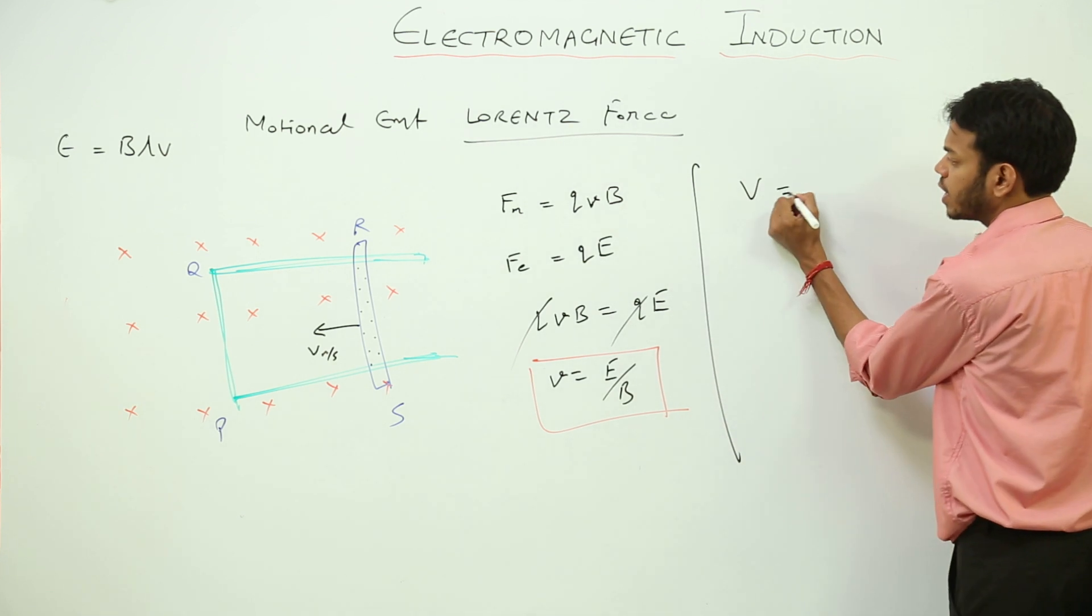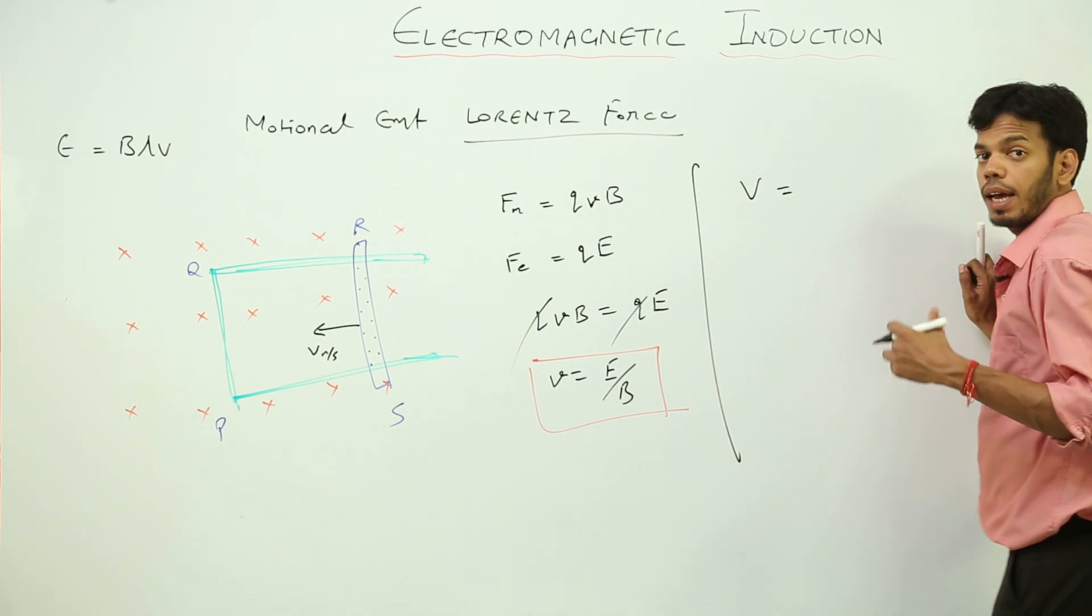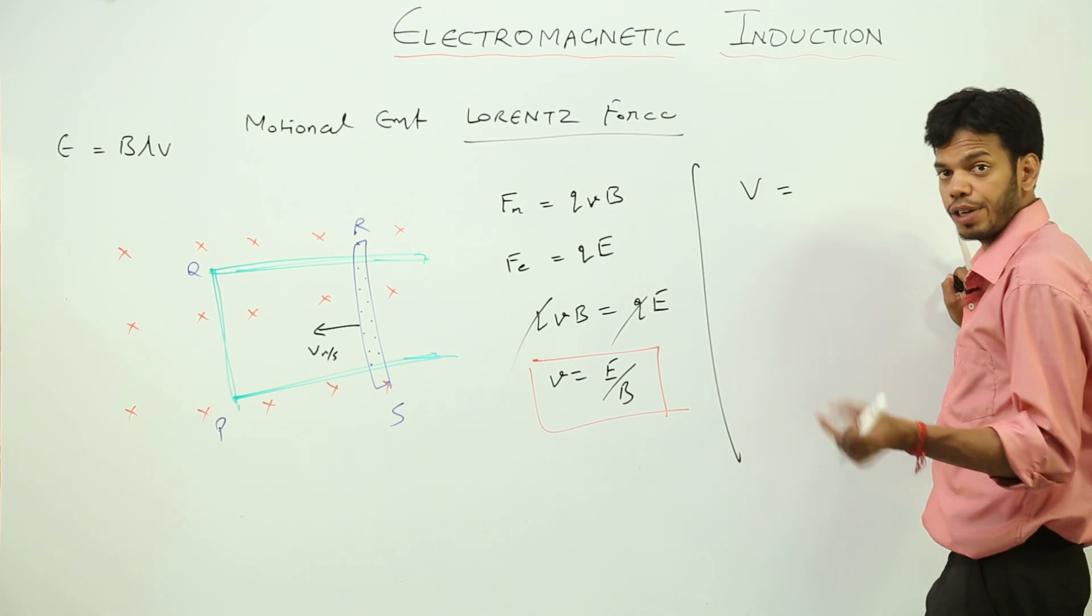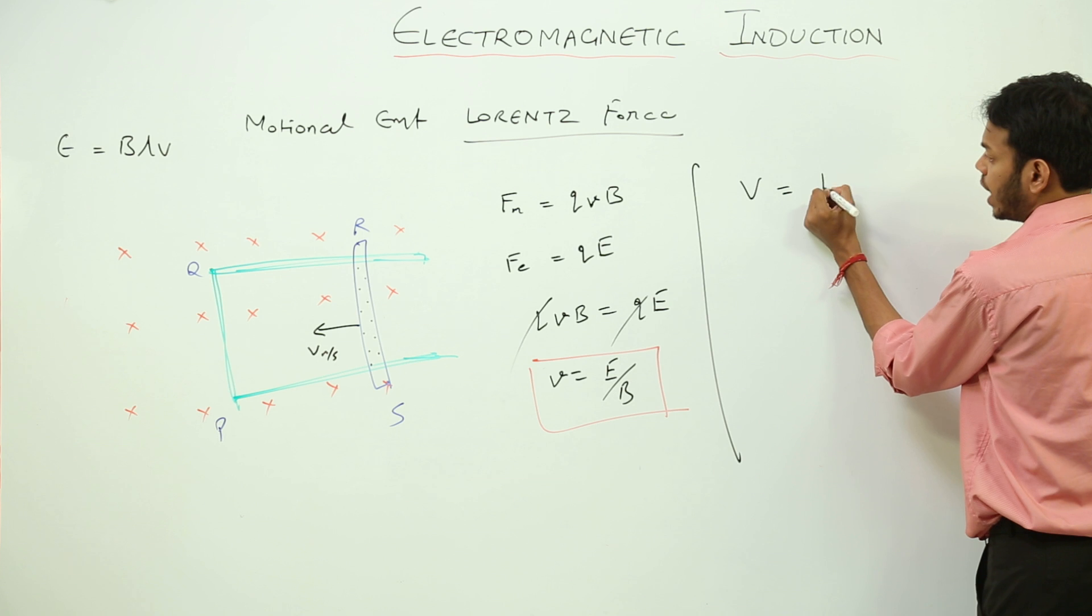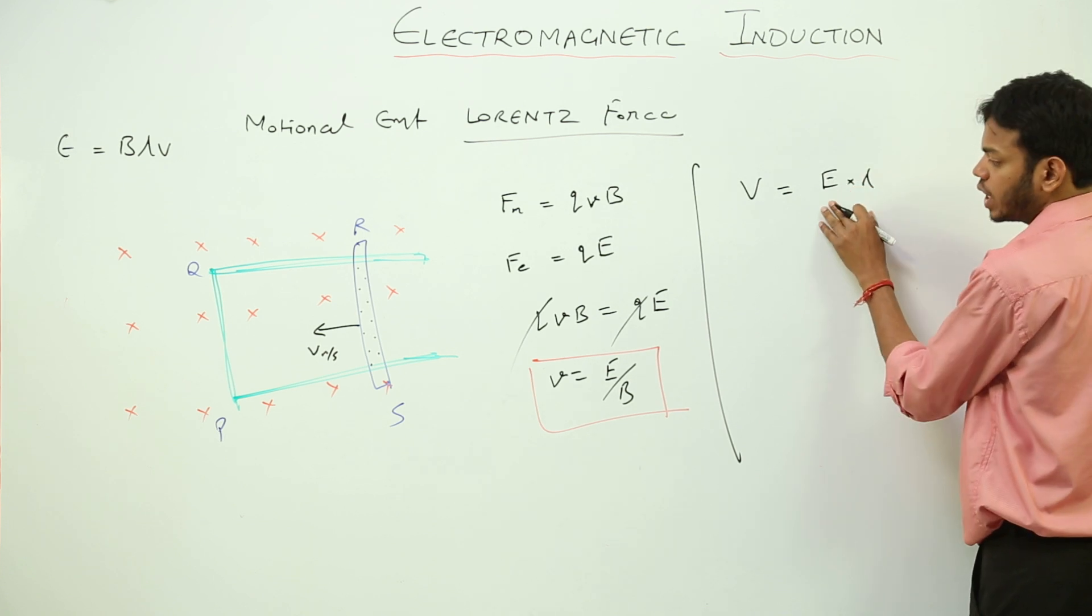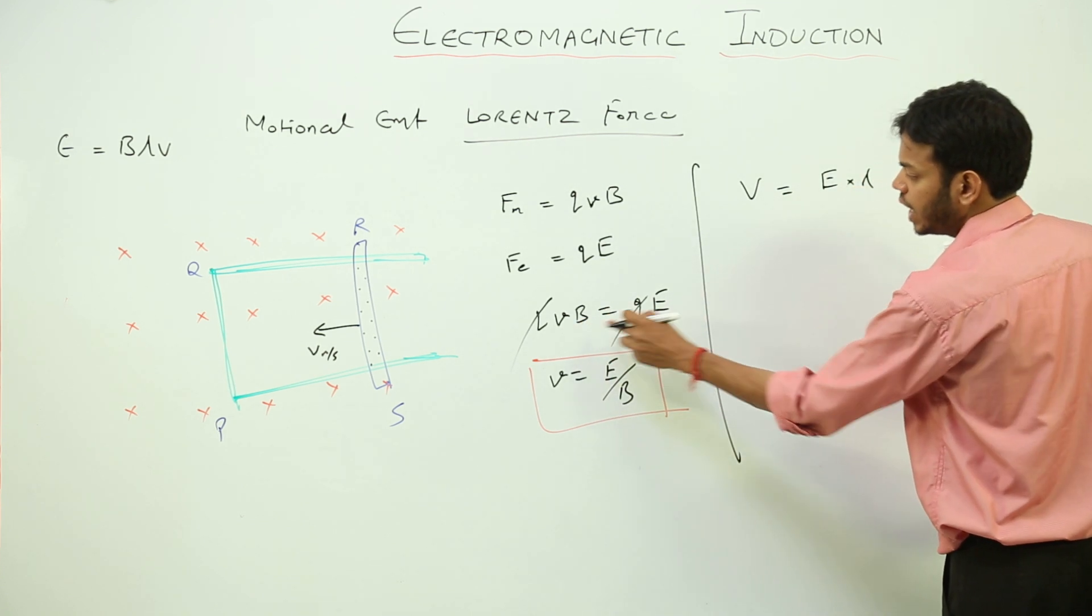What is potential difference? Potential difference has a formula that is electric field into length. We have done already in electrostatics. Electric field into length. What is electric field here? Electric field is v into B.